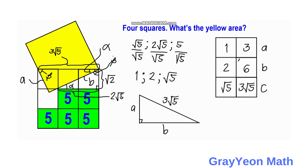The side length of the yellow square is 6. Since we are looking for the area, we square the side length: Area = 6² = 36 square units. That is our answer.